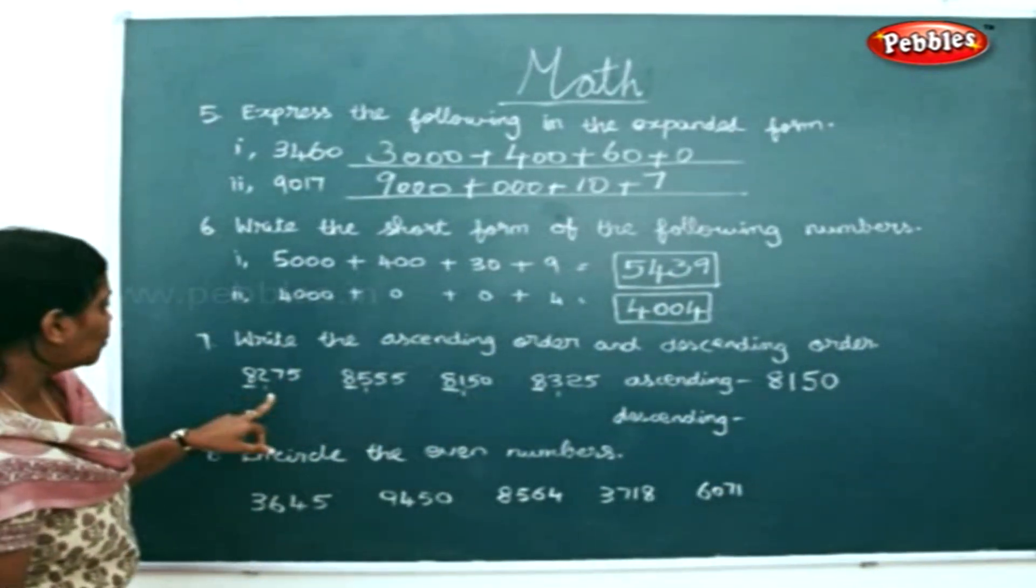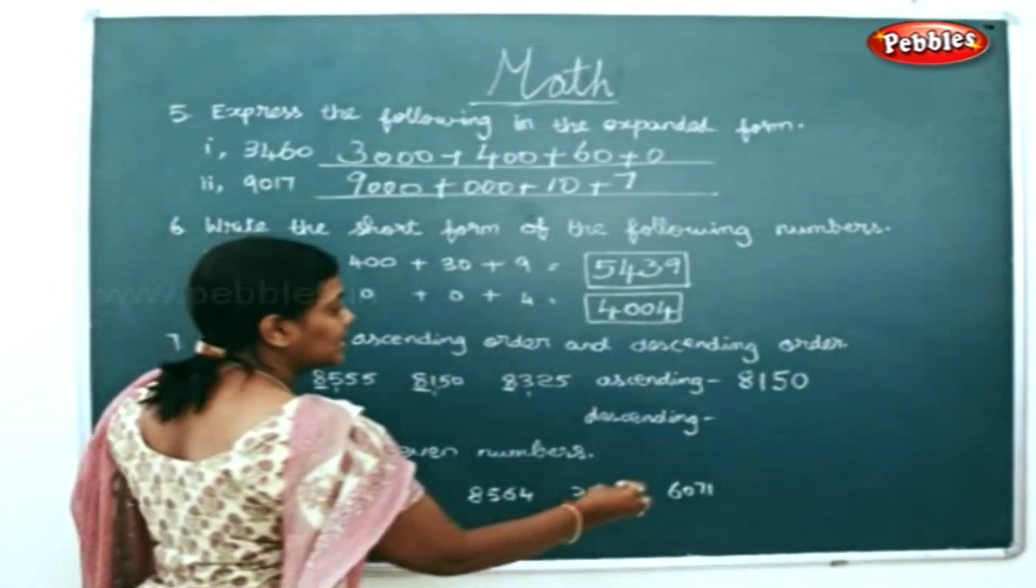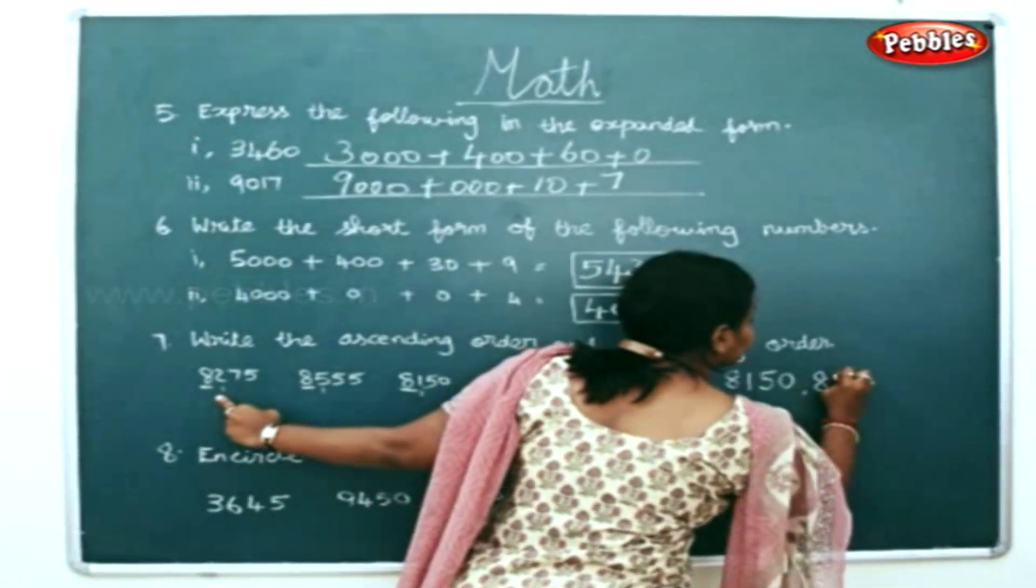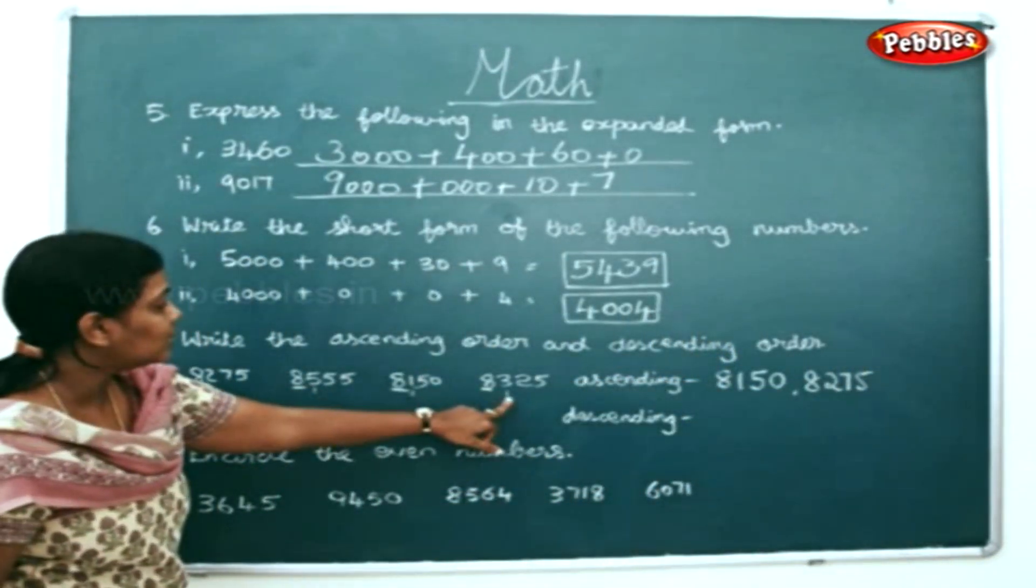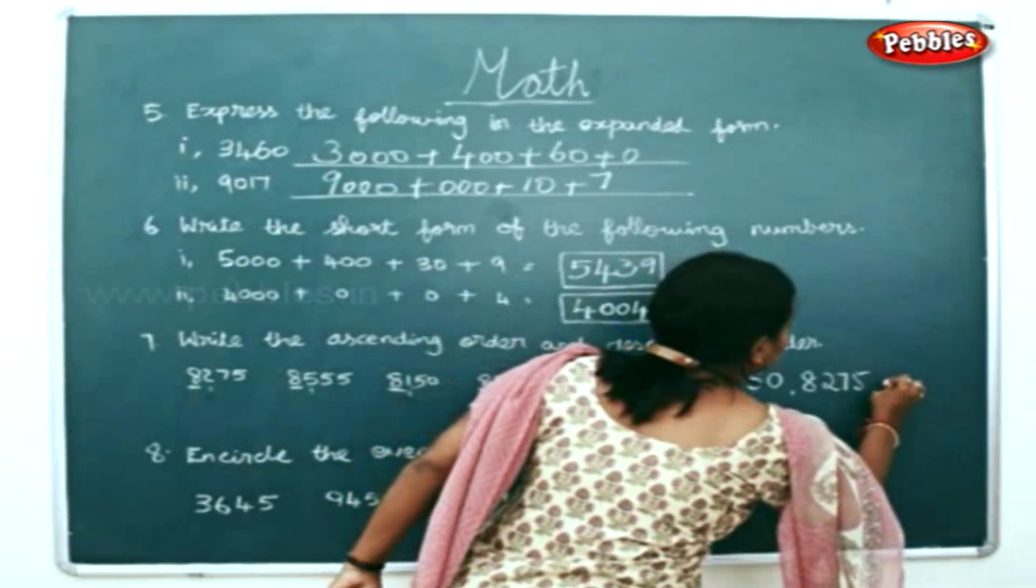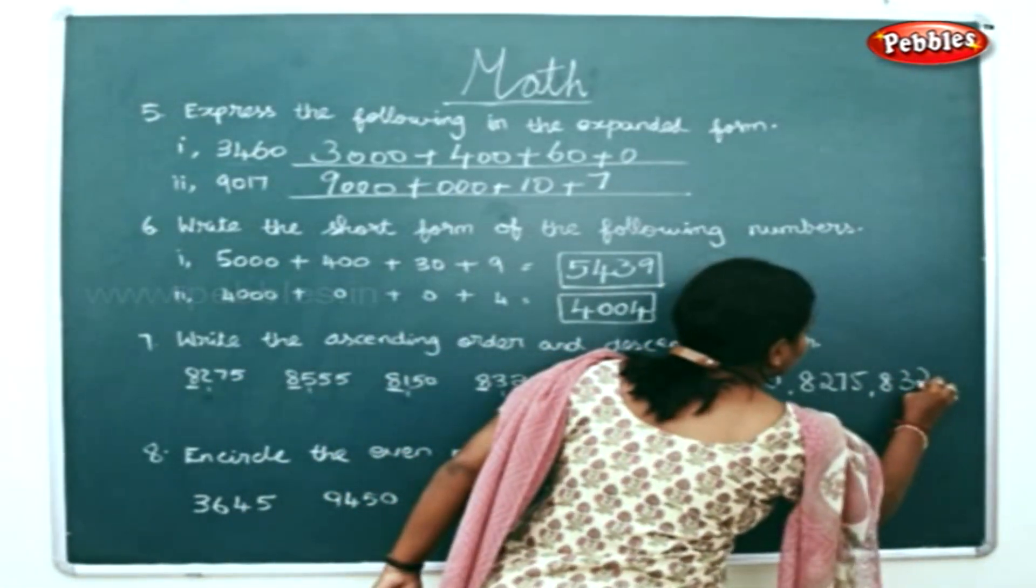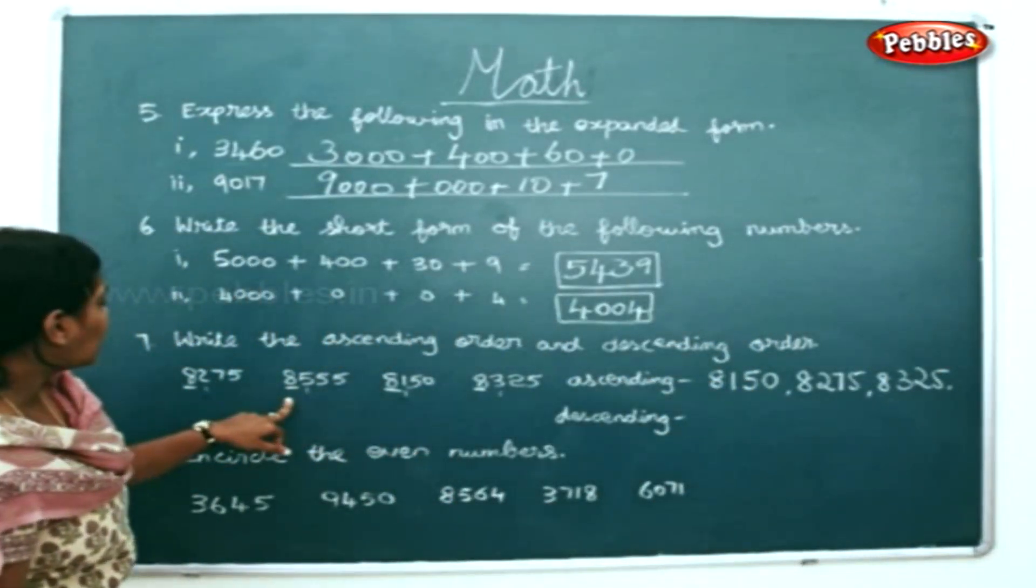Now 2 is the next smaller number, so 8275 will be written next. The next smallest number will be 3, so 8325. The highest number will be 8555.